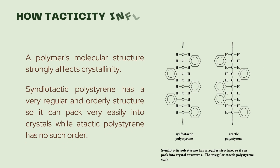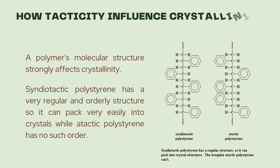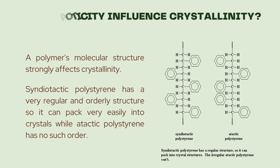A polymer's molecular structure strongly affects crystallinity. For example, syndiotactic polystyrene has a very regular and orderly structure with phenyl groups on alternating sides of the linear carbon backbone. Hence, it can pack very easily into crystals as the backbones can come close together without phenyl groups in the way. In comparison, atactic polystyrene is very amorphous as it has no such order.